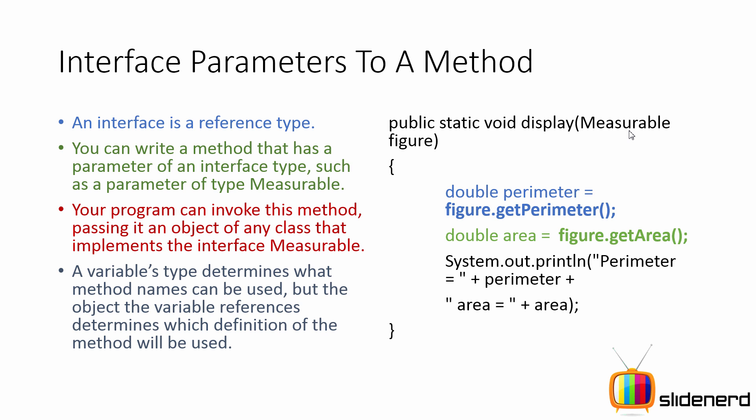So in other words, if there were two classes, one of them rectangle, the other of them circle, and both of them implement the measurable interface, and then if you say getPerimeter, depending on which object you're passing inside the display method, the appropriate getPerimeter method will be called.